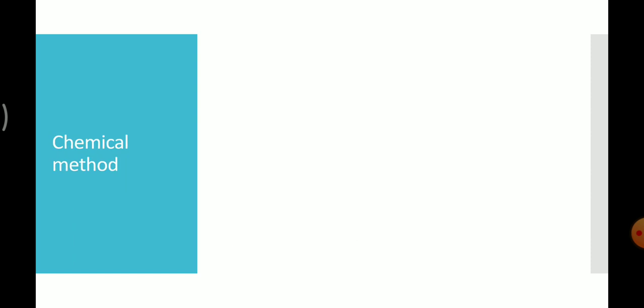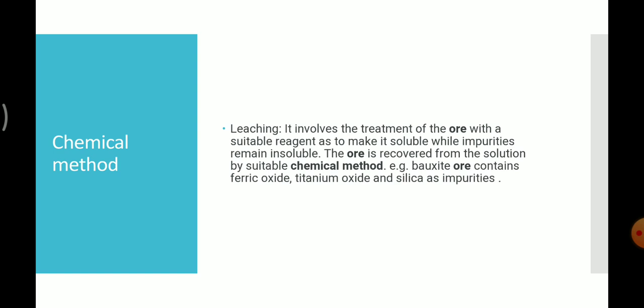The last method is the chemical method, also called leaching. It involves the treatment of ore with a suitable reagent to make it soluble while impurities remain insoluble. The ore is then recovered from the solution by a suitable chemical method.